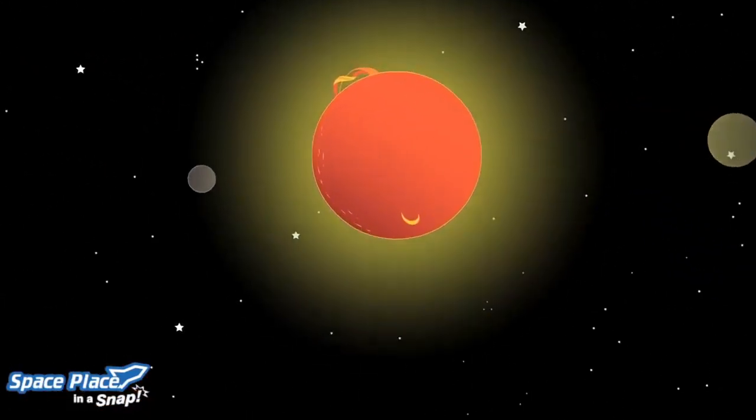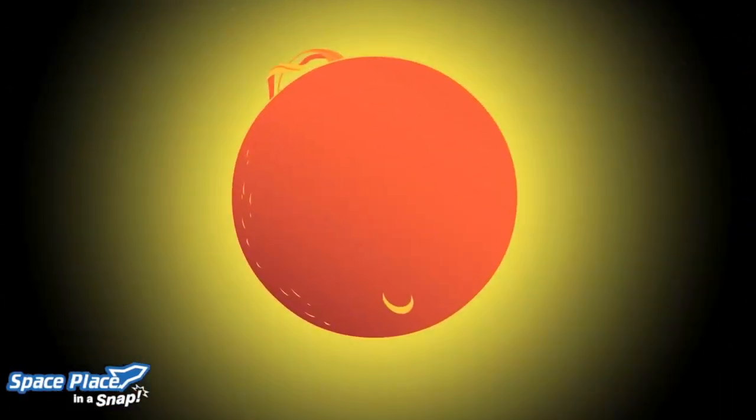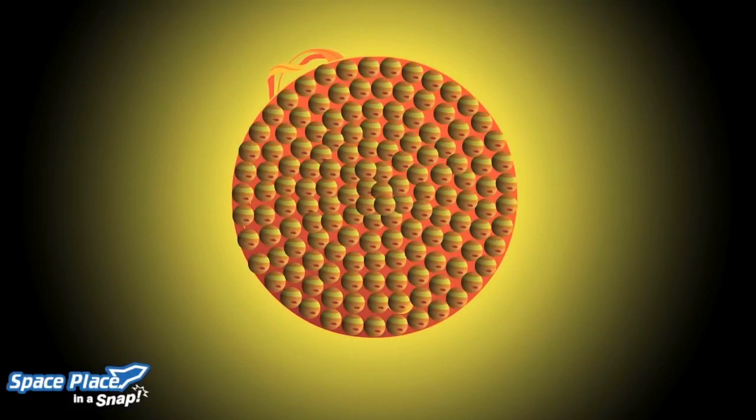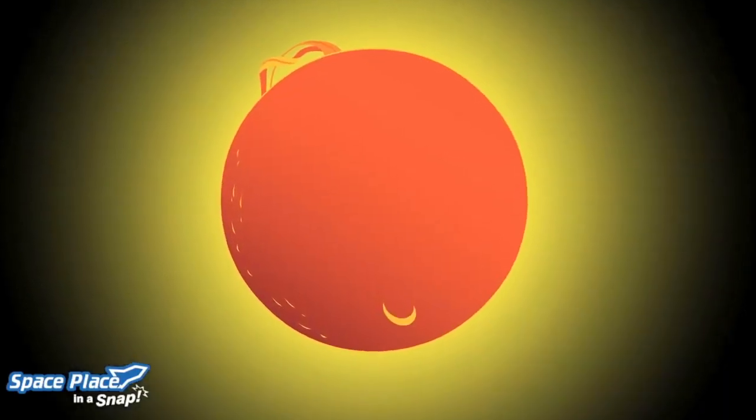But the sun is much bigger than Jupiter. It would take almost 1,000 Jupiters to fill it up. That's a lot of hydrogen.